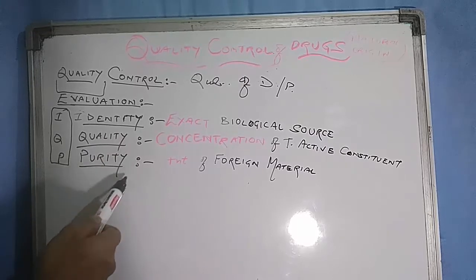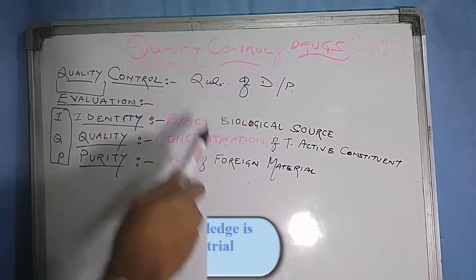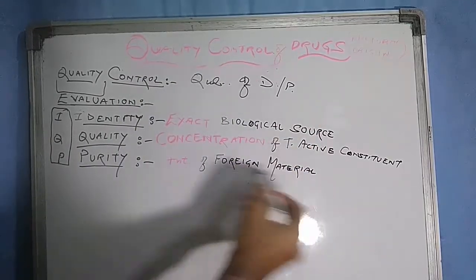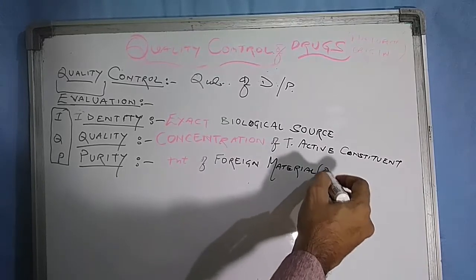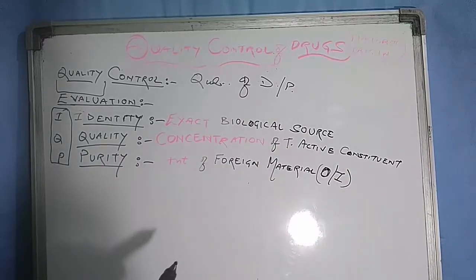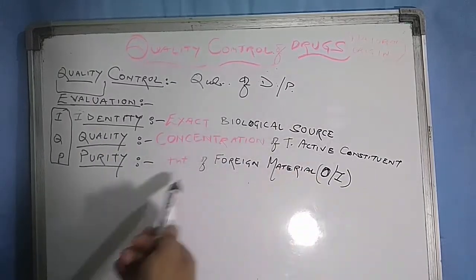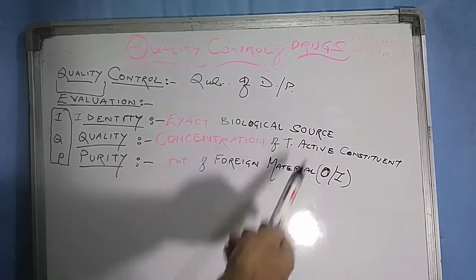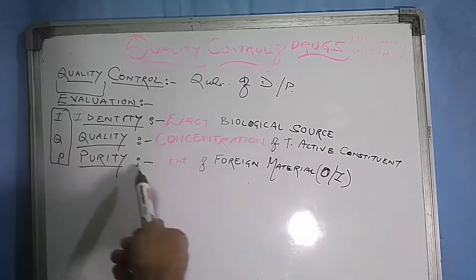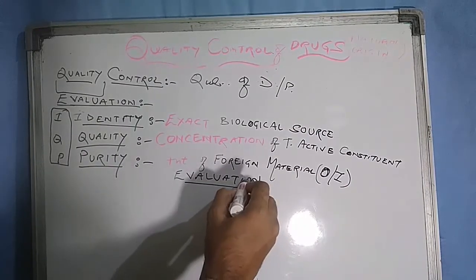The next point is purity. Purity refers to the presence of foreign material into that drug. Foreign material can be organic type or inorganic type. Purity also determines the safety standards of any kind of drug. After this, we will study about the evaluation of crude drug.